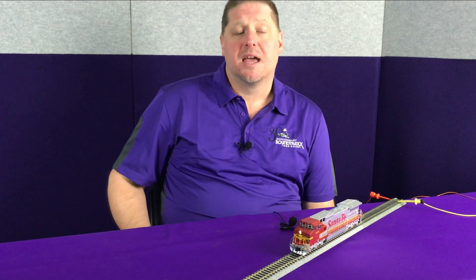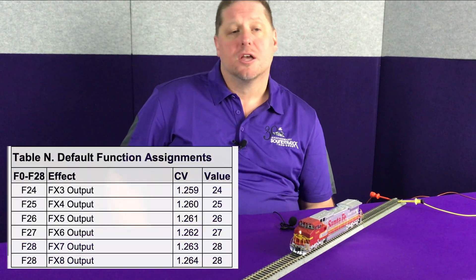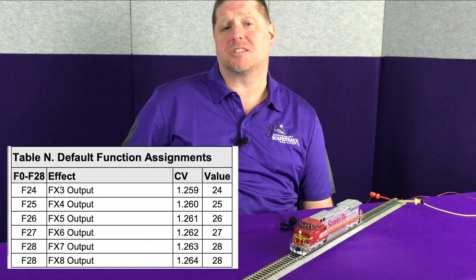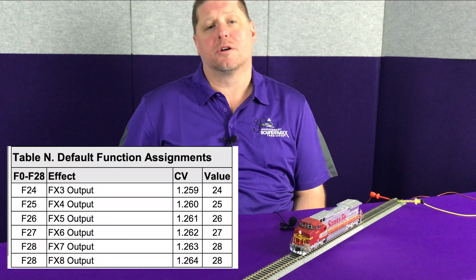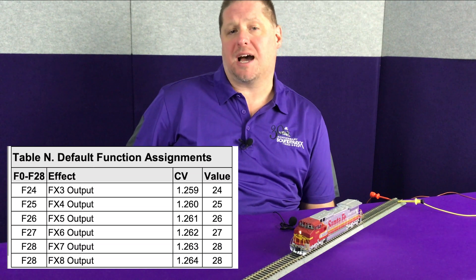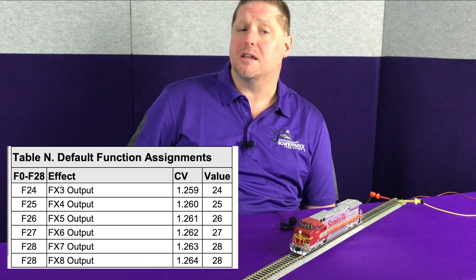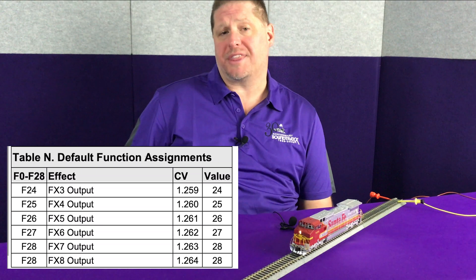To do this, we go to our function mapping CVs. CV 1.259 determines which button turns on and off the FX3 lighting effect, and by default it's button 24. For the purpose of this exercise, we're going to have both lights turned on with button 24. CV 1.259 is already set to a value of 24, so we don't need to do anything with that.